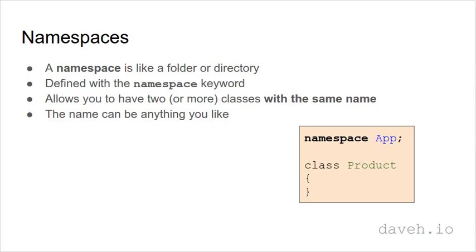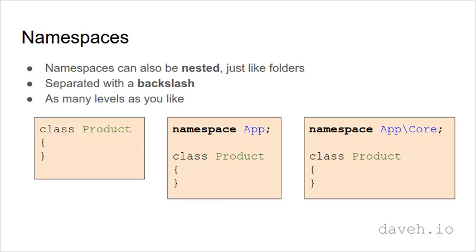For example, here we have a product class and it's in the app namespace. Namespaces can also be nested, just like folders, separated with a backslash, and you can have as many levels as you like.